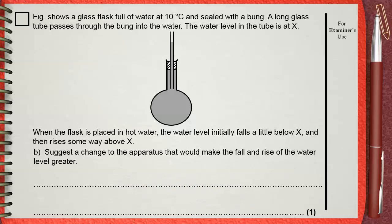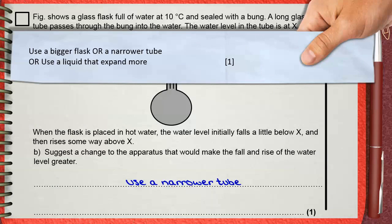So, simply you can use a narrower tube. If you repeat the experiment using a narrower tube, the amount of fall and the amount of rise will be greater than before. The mark scheme also gives other possibilities here.